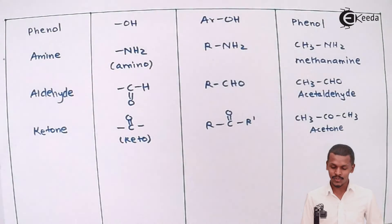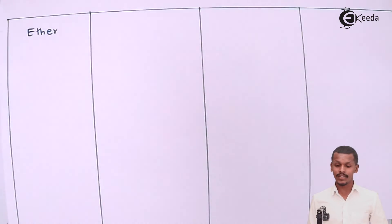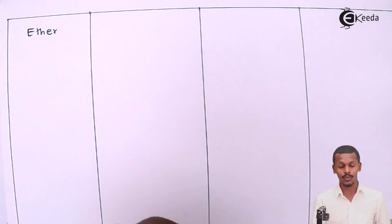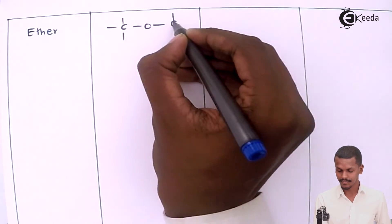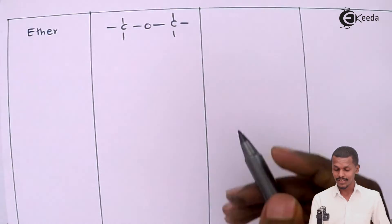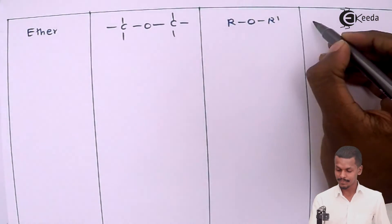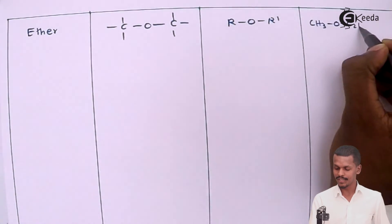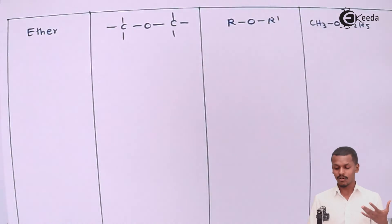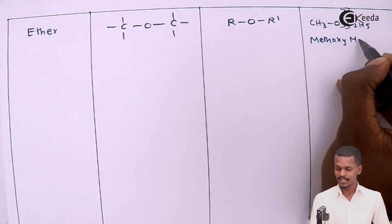The next class is ethers. Ethers are known for their functional group in which an oxygen atom is attached to two different carbon atoms. When two alkyl groups are attached to this oxygen, the compound is an ether. The general formula is ROR'. An example is CH3OC2H5, whose IUPAC name is methoxyethane.